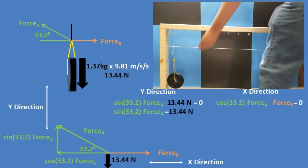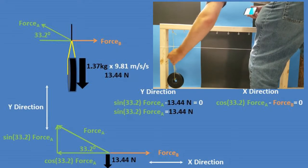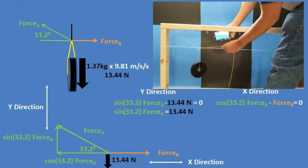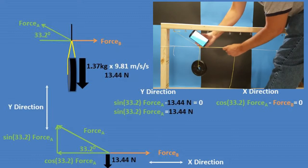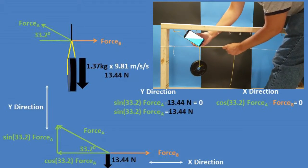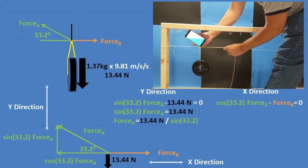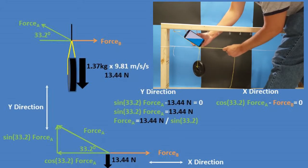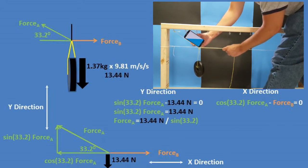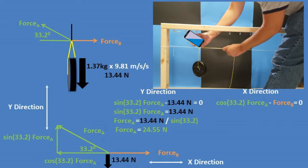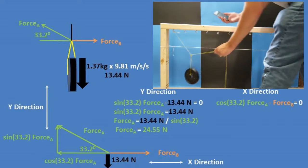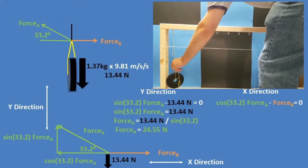Now, we can start rearranging the formula. We will start with the y direction formula. We can add 13.44 newtons to each side to get the weight of the mass to the other side of the equation. For our next step, we can divide both sides of the equation by sine of 33.2 degrees. After plugging the equation into our calculator, we get a tension force of A of 24.55 newtons.